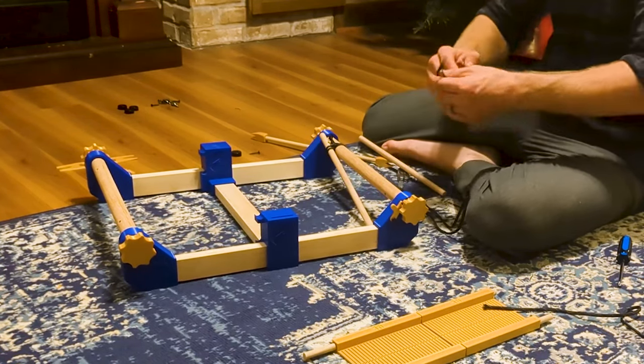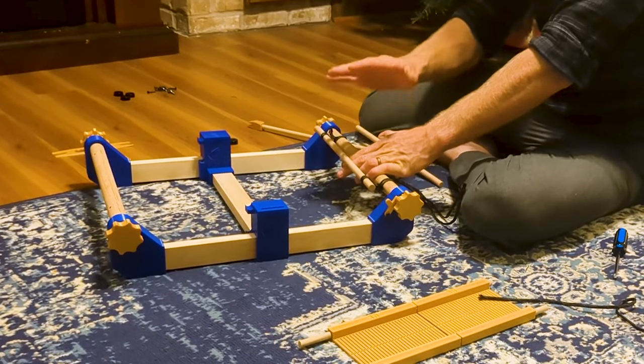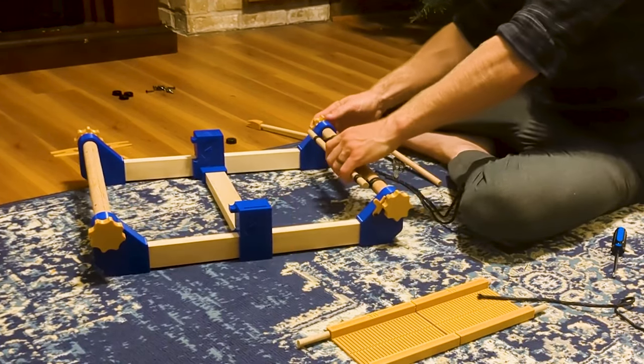And then do the same thing for the other side. This stick is what the warp will be attached to, that will allow it to be ratcheted back into place.